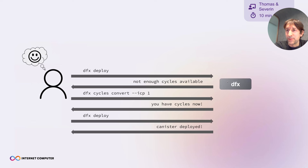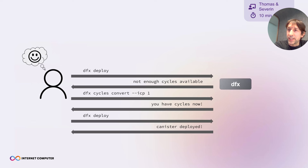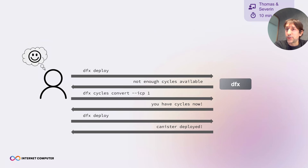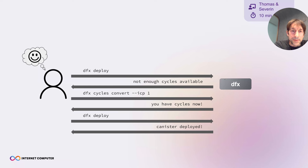Returning to our hapless developer — ideally the flow would look like this: after an unsuccessful dfx deploy call, the response would indicate there simply aren't enough cycles available for the deployment. The user can then run dfx cycles convert to get cycles, and the subsequent dfx deploy call would succeed, taking cycles directly from the user's balance.